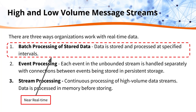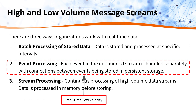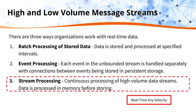In conclusion: batch processing is near real-time, often minutes but more likely hours — data is stored and then processed. Event processing handles each discrete event separately, with connections between events stored in persistent storage, making it good for real-time low-velocity data. Stream processing is suited to much higher velocity data, and data is processed in-memory before storing.